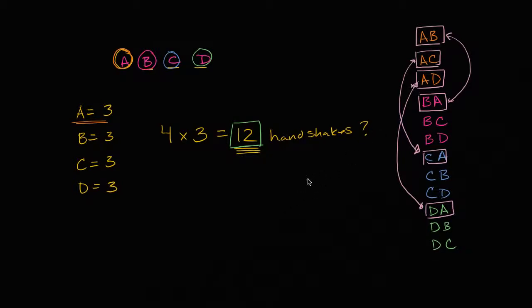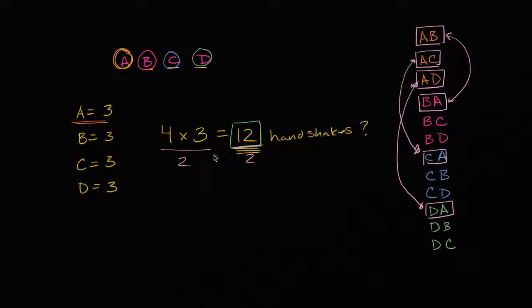If we're double counting, what should we do to this number 12? Well, we should just divide it by two. Over here we're counting when A shakes D's hand; over here we're counting when D shakes A's hand, but that's really the same thing. So four times three divided by two is 12 divided by two — we get a total of six handshakes.